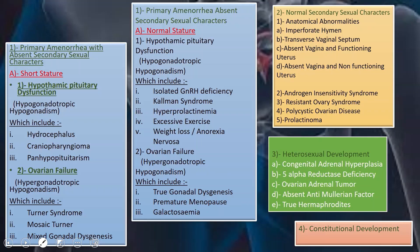Primary amenorrhea with absent secondary sexual characteristics is further divided into short stature and normal stature groups. In the short stature group, we have two subgroups: hypothalamic pituitary dysfunction (hypogonadotrophic hypogonadism), which includes hydrocephalus, craniopharyngioma, and panhypopituitarism; and ovarian failure (hypergonadotrophic hypogonadism), which includes Turner syndrome, mosaic Turner, and mixed gonadal dysgenesis.